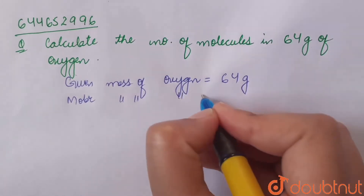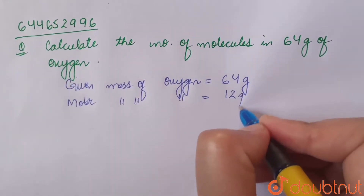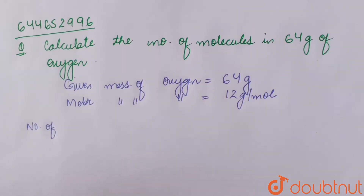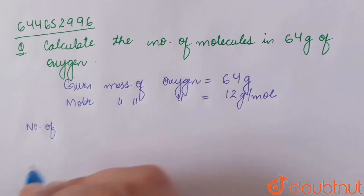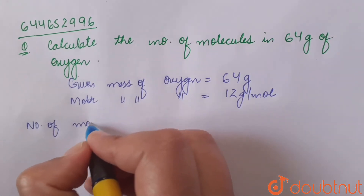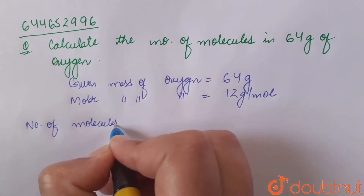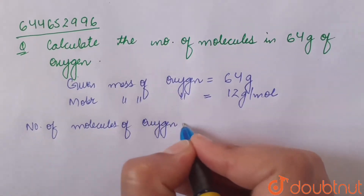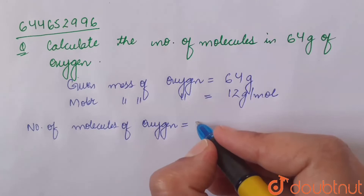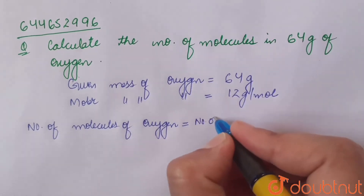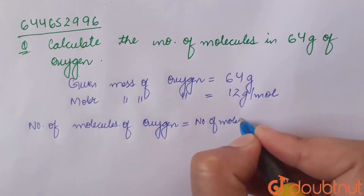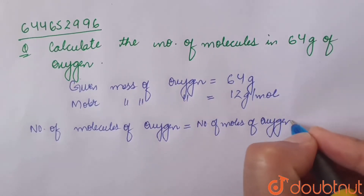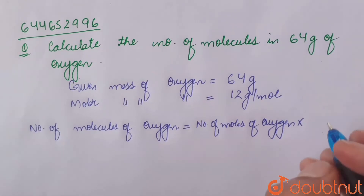The molar mass of oxygen equals 16 grams per mole. The number of molecules of oxygen equals the number of moles of oxygen multiplied by Avogadro's constant.